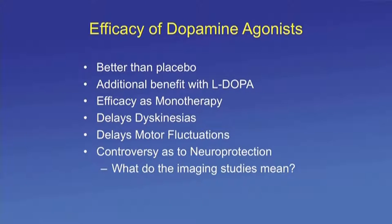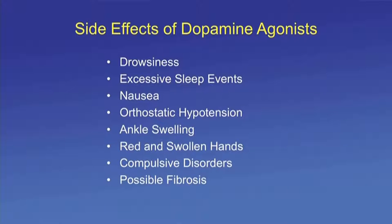Efficacy of dopamine agonists: they are better than placebo in monotherapy or adjunctive therapy, provide additional benefit with L-DOPA, reduce the need for L-DOPA, delay dyskinesias, and delay motor complications and fluctuations. There is some laboratory and animal model evidence of neural protection. Side effects include drowsiness, excessive daytime sleepiness, sudden onset of sleepiness, nausea, orthostatic hypotension, loss of consciousness, ankle swelling, red and swollen hands, impulsive compulsive disorders, and possibly fibrosis.